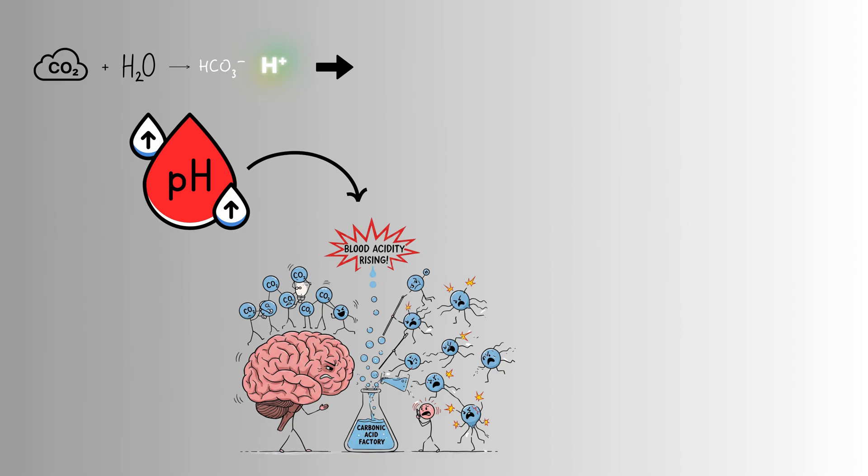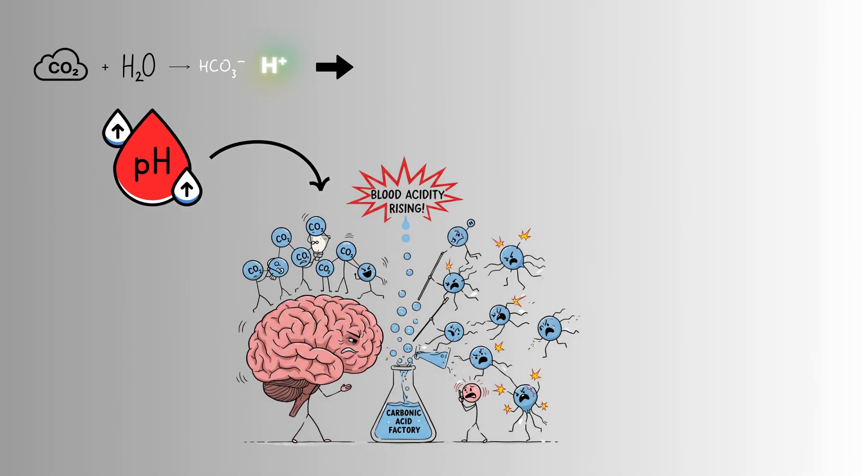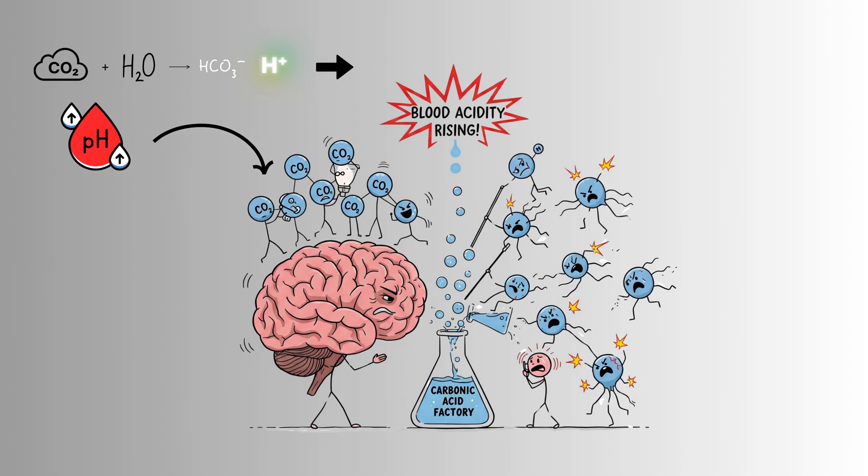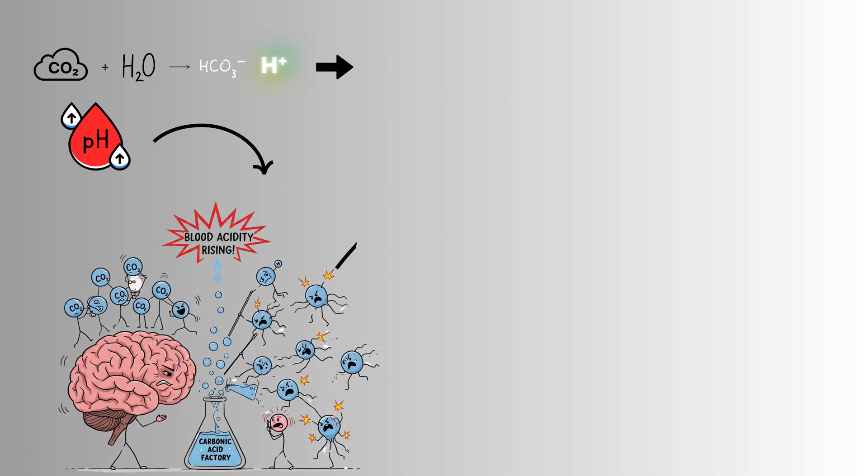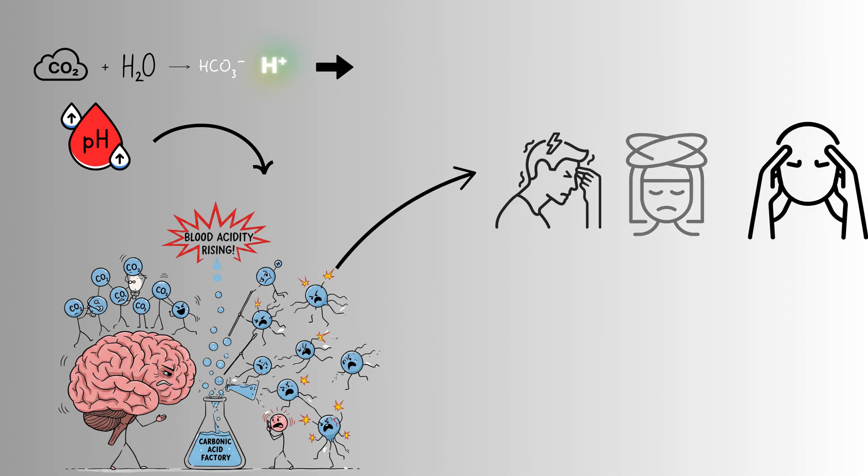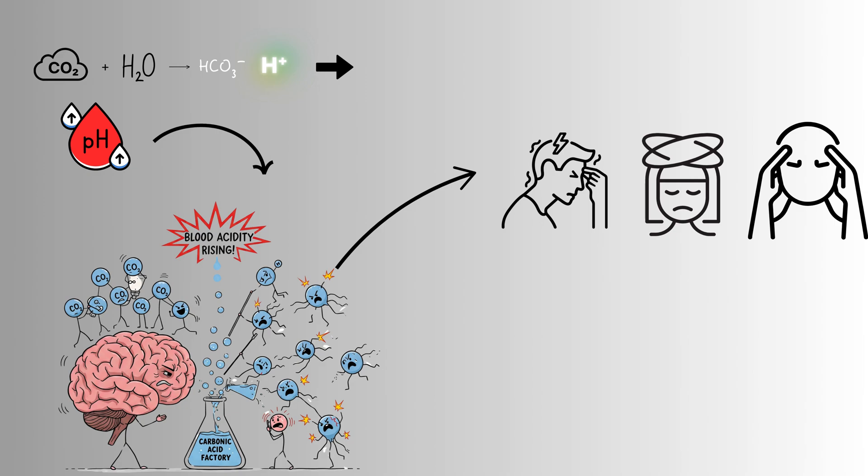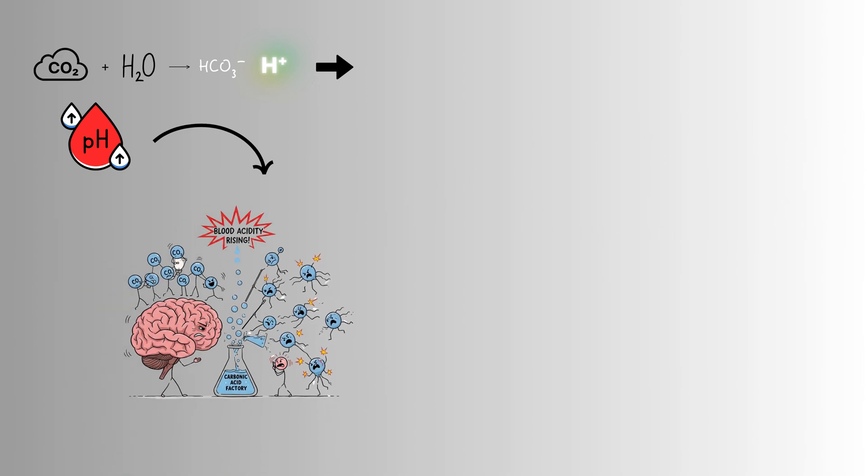This increased acidity directly affects brain cells or neurons. Neurons rely on a delicate balance of ions to generate electrical signals and communicate. The increased hydrogen ion concentration disrupts this balance, interfering with how these ions move across neuronal membranes and affecting neuronal excitability. This disruption can manifest in various ways. Initially, you might experience headaches, drowsiness, and difficulty concentrating. These symptoms are often subtle.